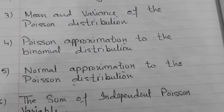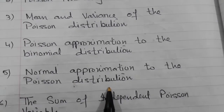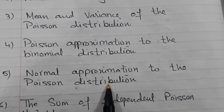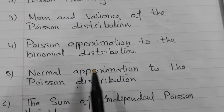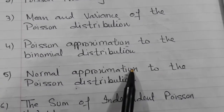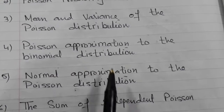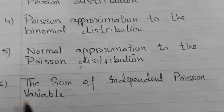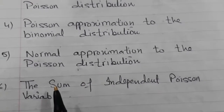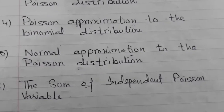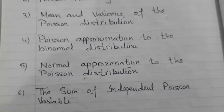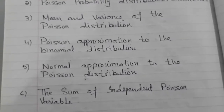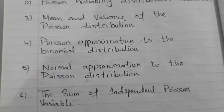Then we will see the normal approximation to the Poisson distribution, where the question is given in Poisson form but solved using normal distribution. Again, certain conditions must be met. We will also find out how to sum up more than one Poisson variable and then solve the question. We will look at all these aspects as they are syllabus requirements, understood through examples from past papers.